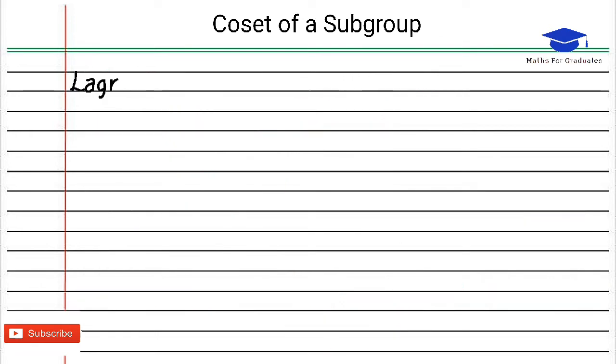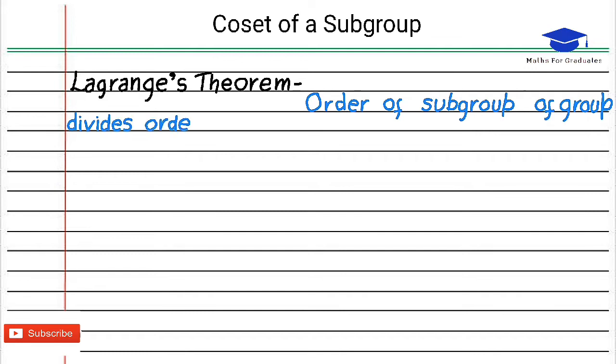Now let's prove Lagrange's theorem. Statement of Lagrange's theorem is order of subgroup of group divides order of group. Let order of group be n and order of H be m. That means H has m distinct elements.